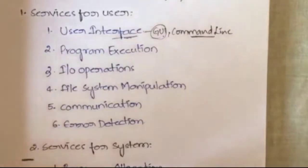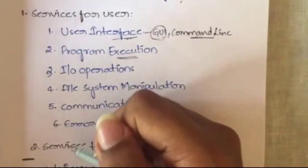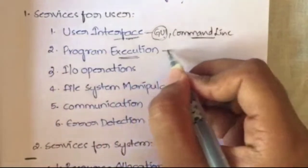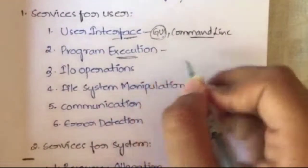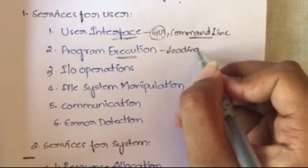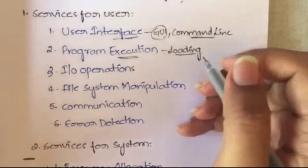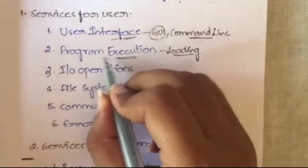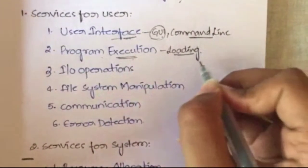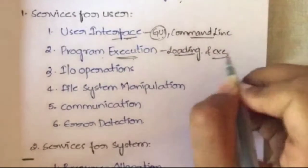The next service is program execution. Program execution means loading the program into memory and executing it. In order to execute a program, you first have to load that program into your computer's memory. So program execution involves loading the program into memory and then executing it.